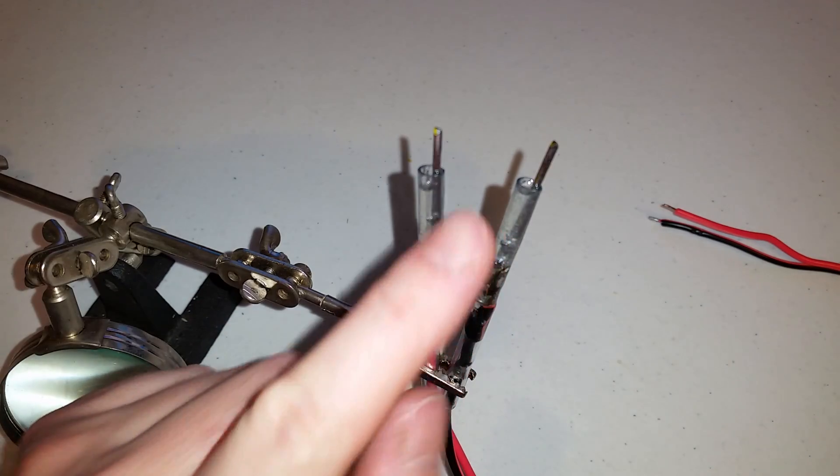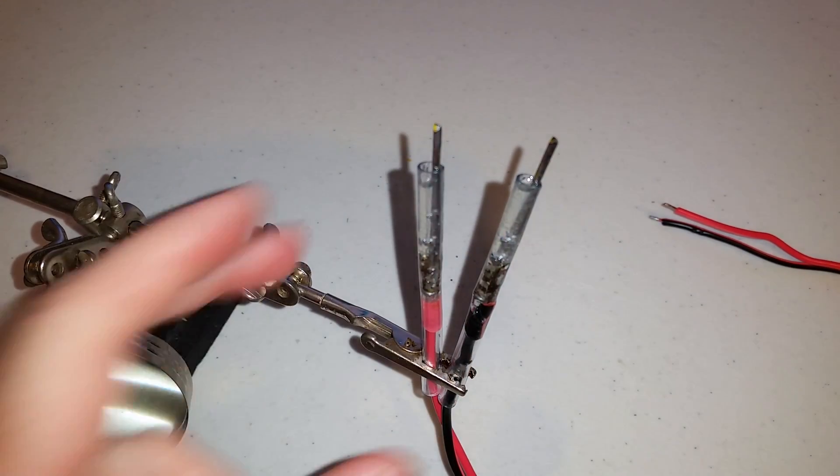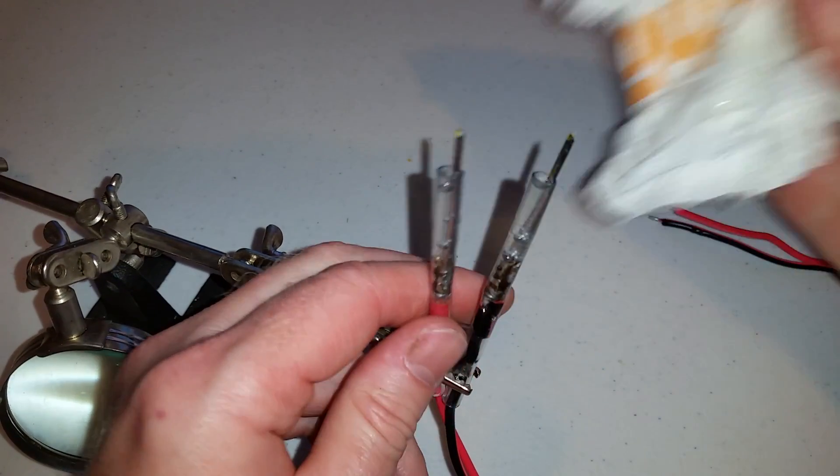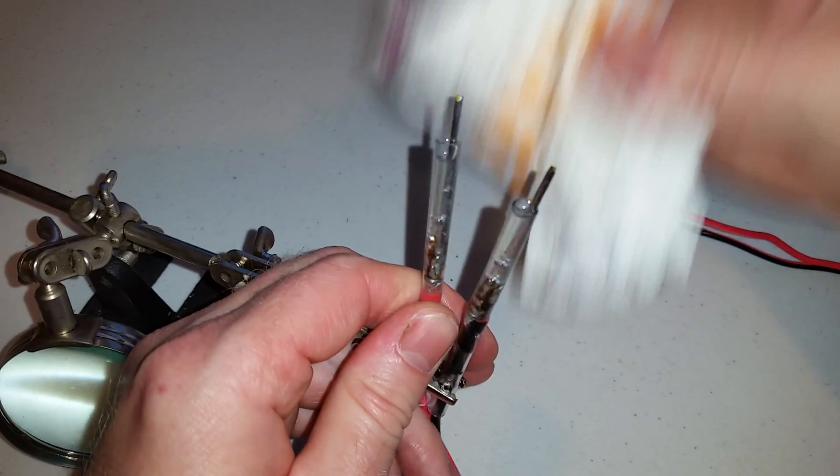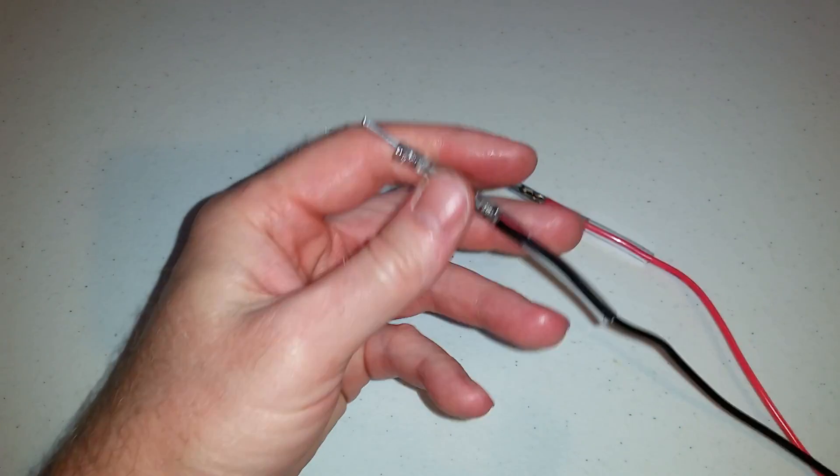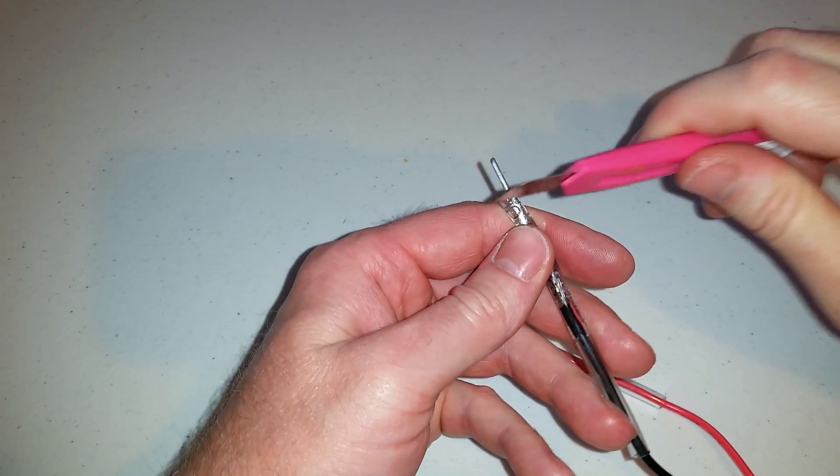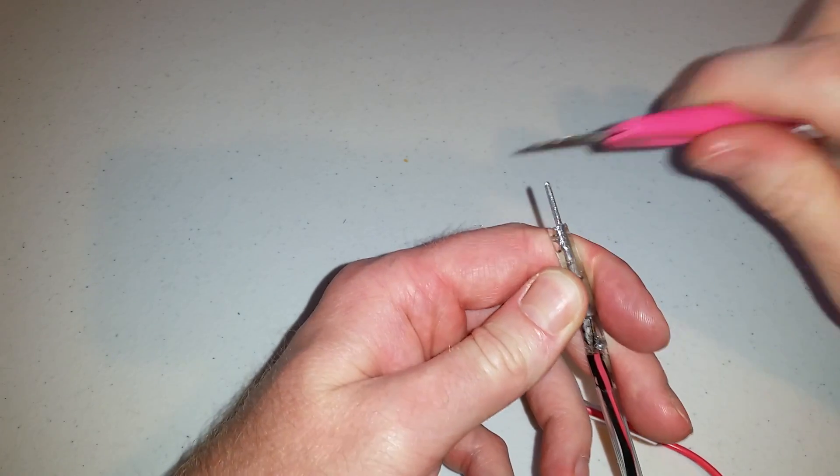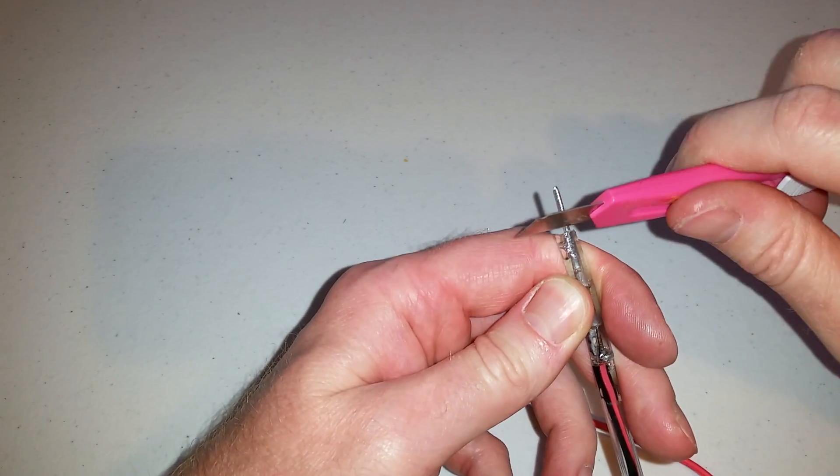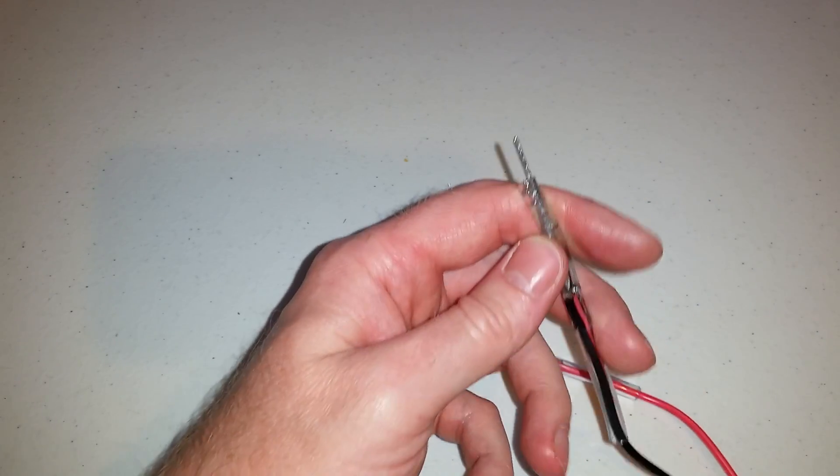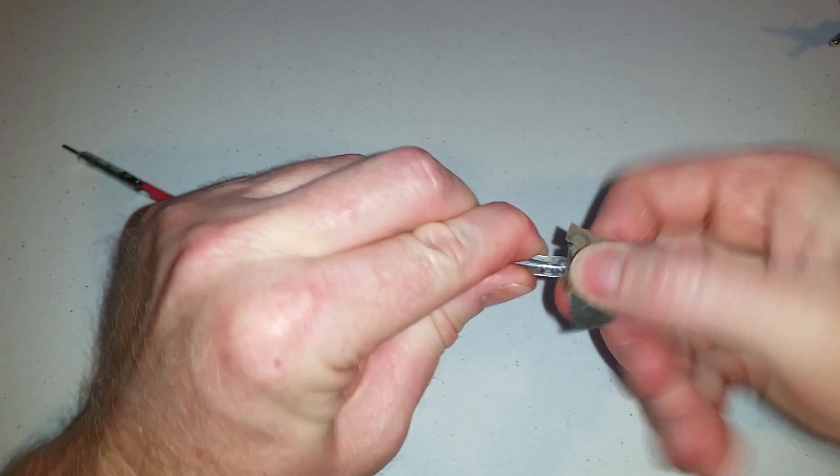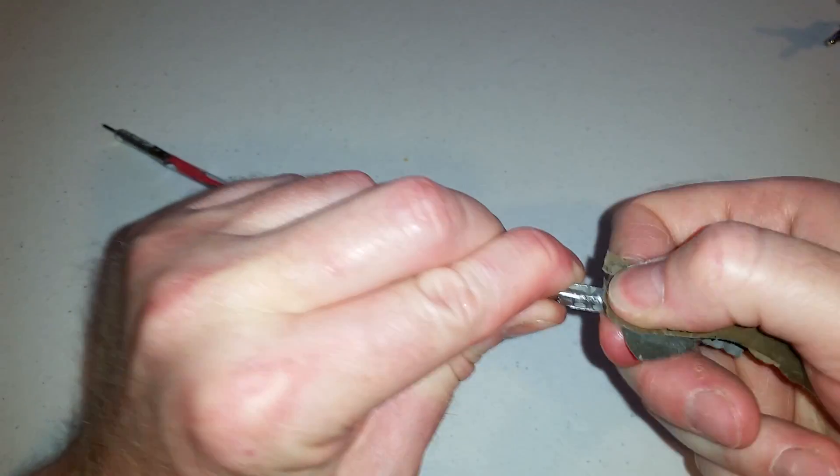So once you have the epoxy packed into the airline tubing, you can take a paper towel and gently go over the outside to wipe any excess off. And after it hardens, you can take a razor blade and scrape the epoxy that is on the metal probe.